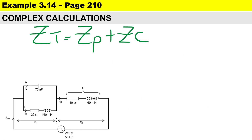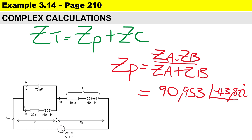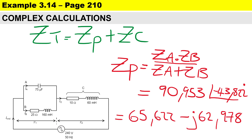To calculate the total impedance, it's the impedance of the parallel branch plus the impedance of branch C. For the parallel branch, the formula is Z_A multiplied by Z_B, divided by Z_A plus Z_B. We multiply in polar format and add in rectangular format to get the answer in both polar and rectangular form.